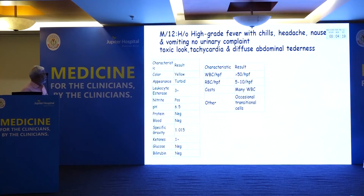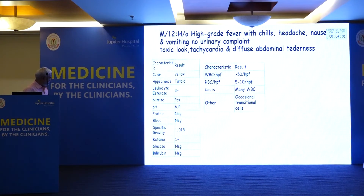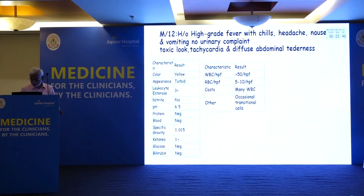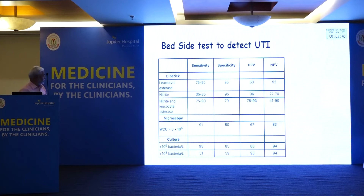Case: a patient had high-grade fever, rigors, headache, nausea, vomiting, no urinary complaints, was toxic with tachycardia and diffuse abdominal tenderness. Dipstick showed leukocyte esterase 3+, nitrite positive, and WBC more than 50, RBC 5 to 10. This suggested urinary tract infection — a simple urinary tract infection that gave the diagnosis. Leukocyte esterase and nitrite have quite good specificity and sensitivity as a bedside test.